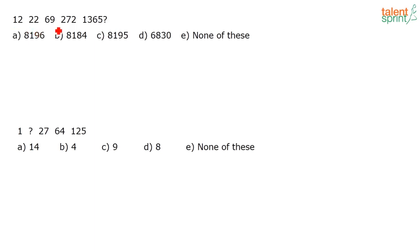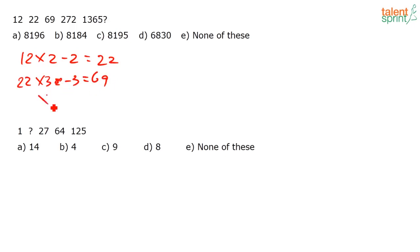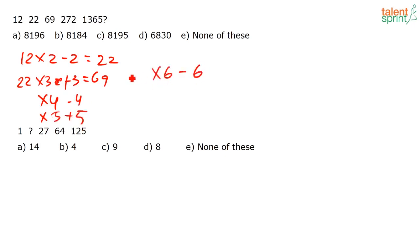First series question: 12, 22, 69, 272, 1365, 8184. The pattern is: multiply by increasing integers and subtract that same integer. 12 × 2 − 2 = 22; 22 × 3 + 3 = 69; 69 × 4 − 4 = 272; 272 × 5 + 5 = 1365; 1365 × 6 − 6 = 8184.